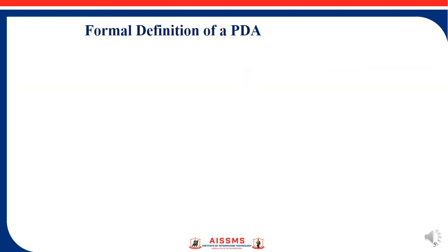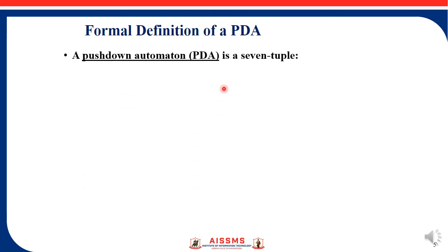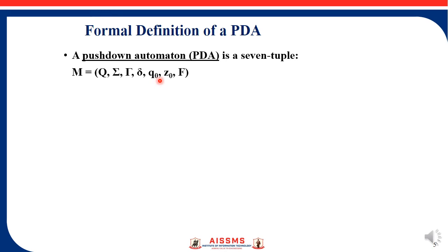Now let us see the formal definition of the PDA. The PDA is represented using 7 tuples, similar to how we represent Finite Automata using 5 tuples. These are the 7 tuples for the PDA — let us see each and every element of this tuple.